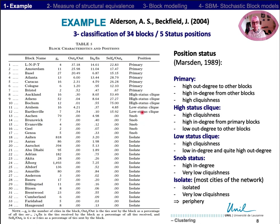They qualify the 34 blocks according to their number of cities, their out-degree as a proportion of the total out-degree, their in-degree as a proportion of the total in-degree, and the links they exchange mutually as a proportion of their total outreach links.